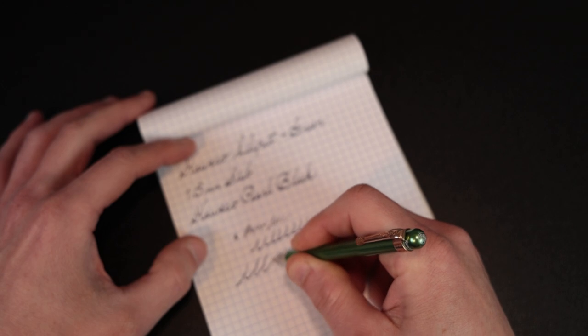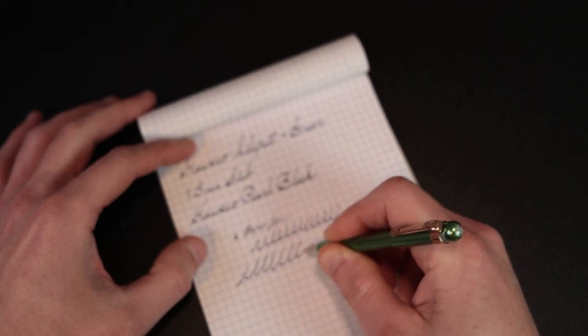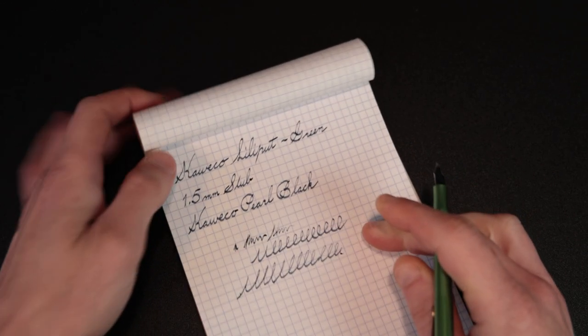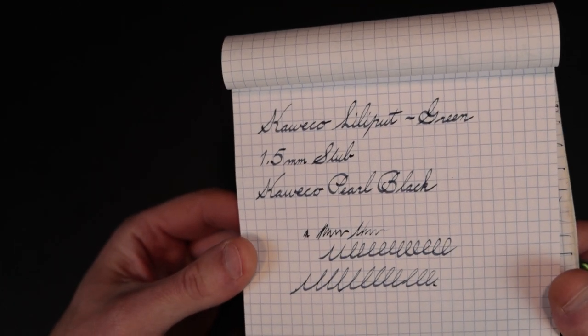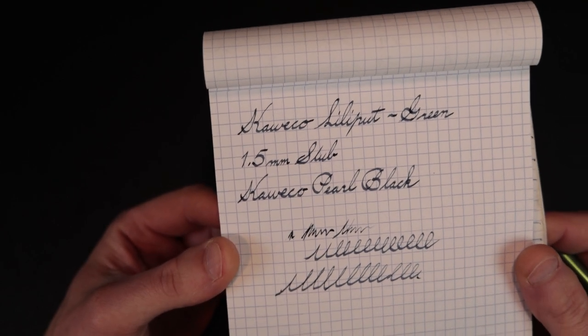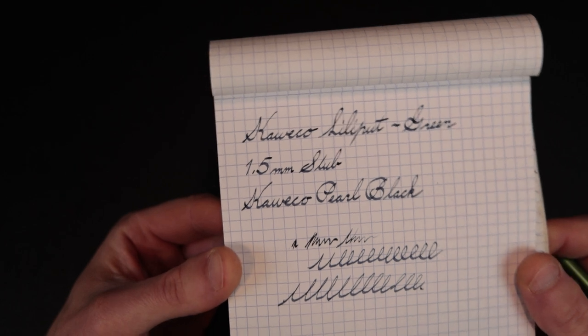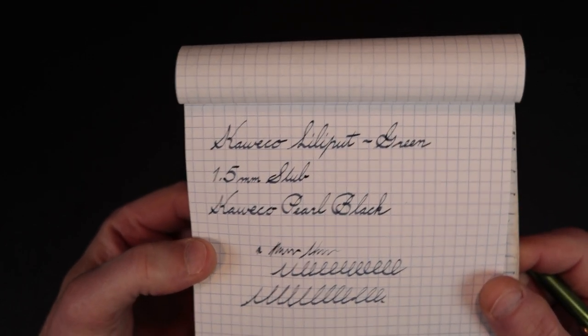I do have some micro mesh pads that I could use if I needed to, but it puts out ink well once you get going with it. You can just see how that looks. I really do like the look of the 1.5 millimeter stub, but I think maybe eventually I'd get a 1.1 millimeter stub for this. But it looks good if you're trying to write in the sort of faux Spencerian handwriting that I use.